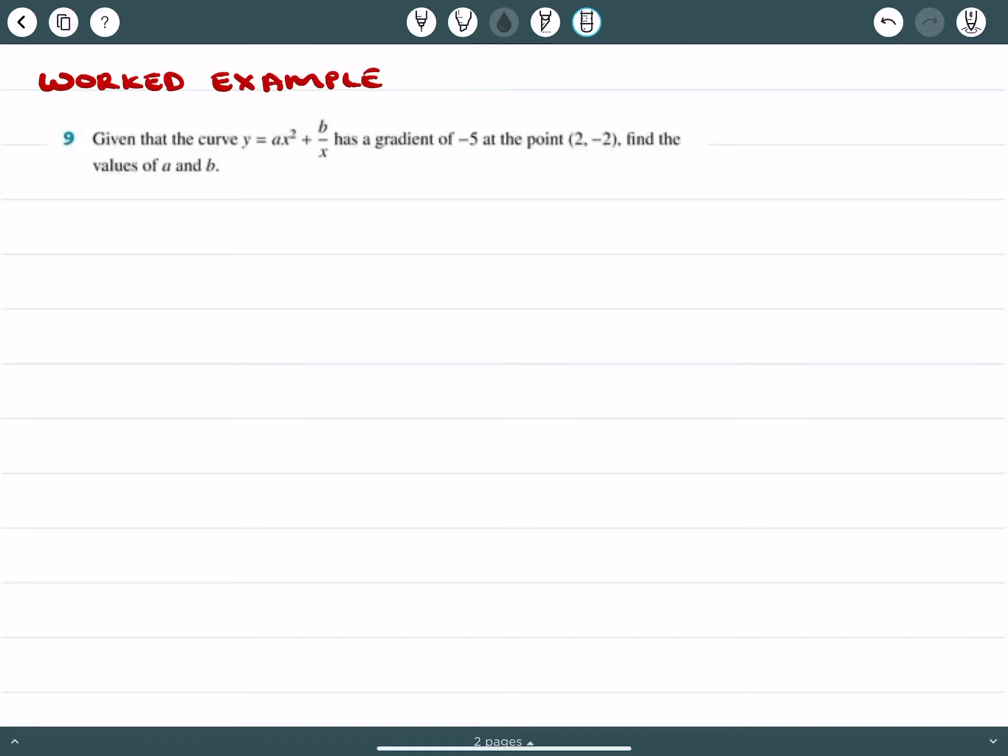The first question is: given that the curve y equals ax squared plus b over x has a gradient of negative 5 at the point x equals 2, y equals negative 2, find the values of a and b.